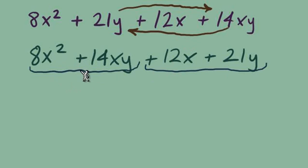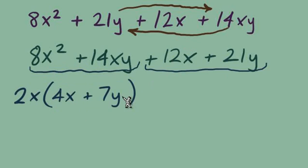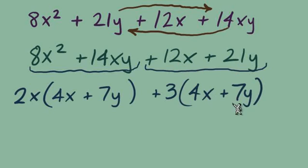From the first pair we have a GCF 2x. We will have leftover in parentheses 4x plus 7y. From the second pair of terms we have a GCF. We can divide both of these coefficients by 3 and that will leave us with 4x plus 7y.